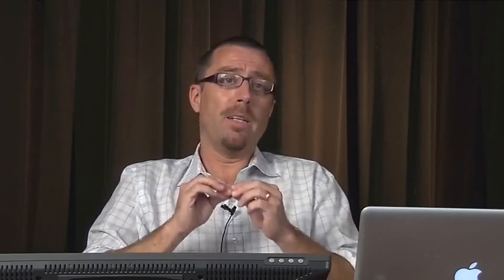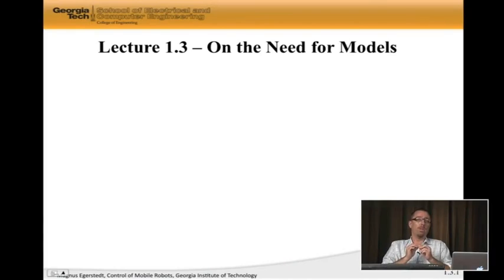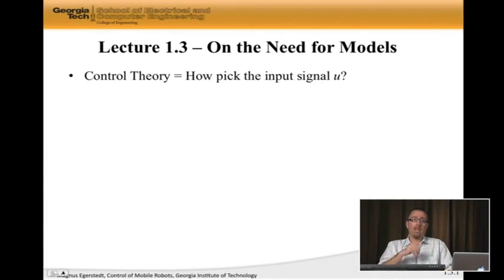And one thing that we're going to need in order to do this is come up with models. Models are going to be an approximation and an abstraction of what the actual system is doing, and the control design is going to be made relative to that model and then deployed on the real system. But without models, we can't really do much in terms of control design. We would just be stabbing in the dark. So models are actually key when it comes to designing controllers.